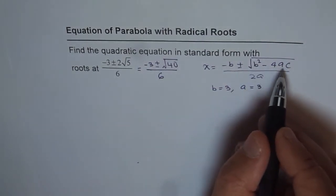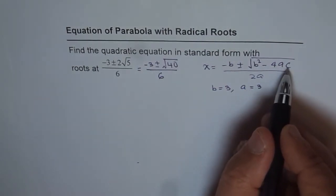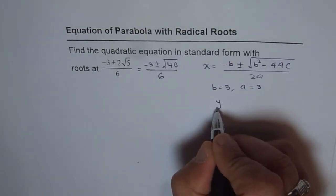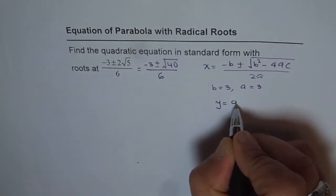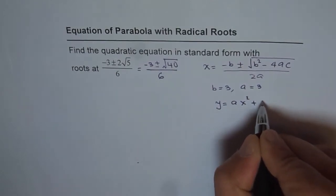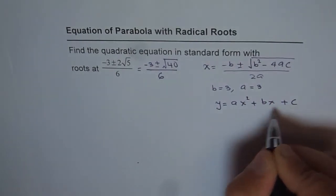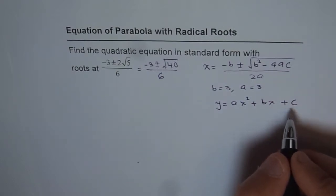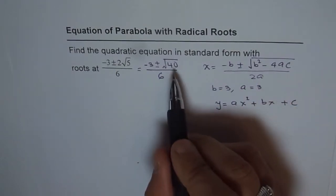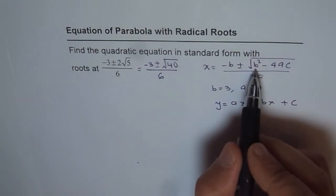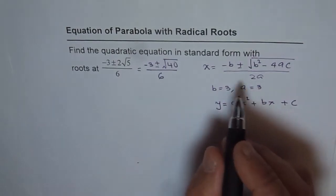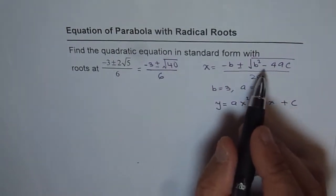Since we know b and a, we can find c. The quadratic equation will be in the form y = ax² + bx + c. In this equation, we know a and b, and we want to find c. We can solve for c by equating b² - 4ac = 40.